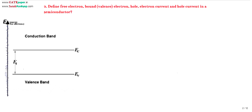Hello. Now we discuss about what is meant by free electron, bound electron, hole, electron current, and hole current. We will see the differences between them.